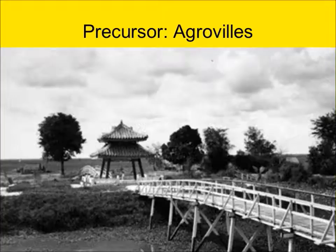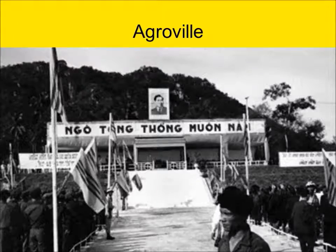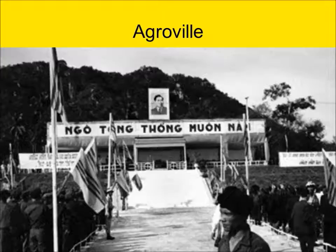The image on this slide is from 1961 and depicts an agraville in the Mekong Delta. This other image depicts the Ba Thay agraville from 1961, located west of Saigon. This photograph shows the entrance to the community, which is guarded and has a moat around the perimeter.